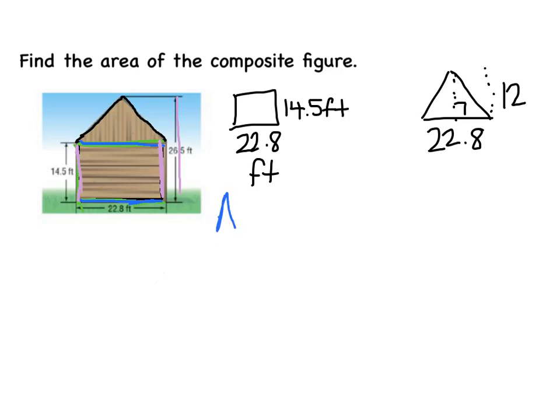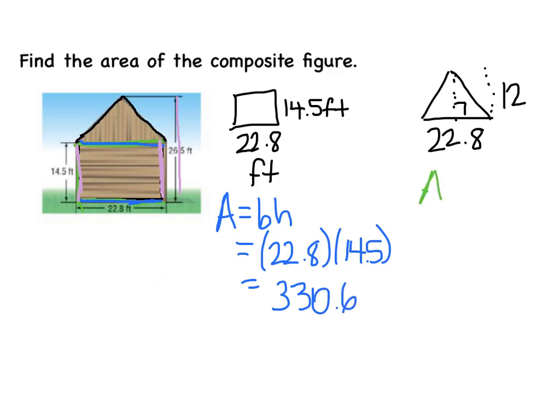So let's go with area equals base times height. So that's going to be 22 and 8 tenths times 14 and 5 tenths. We're going to multiply that out to get 330 and 6 tenths. And now I'm going to do the triangle.